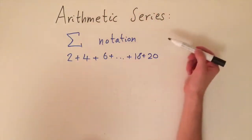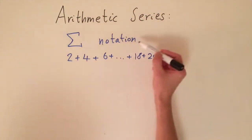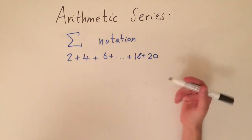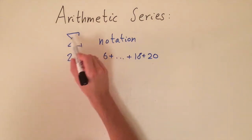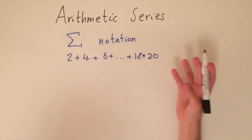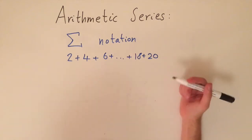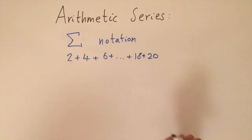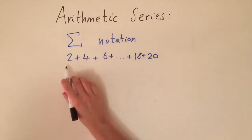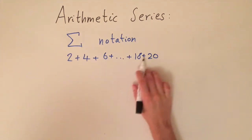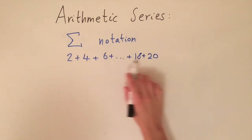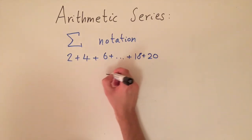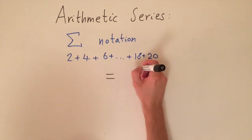In this video we're going to be talking about sigma notation, which is a notation used to abbreviate series — arithmetic series for example. This letter is a Greek letter called sigma, basically the capital S in the Greek alphabet. We can use this symbol to help us write long series in a very convenient way. For example, we've got the series 2 plus 4 plus 6 all the way up to 20 — we're adding the even numbers up to 20, so it's a finite series.